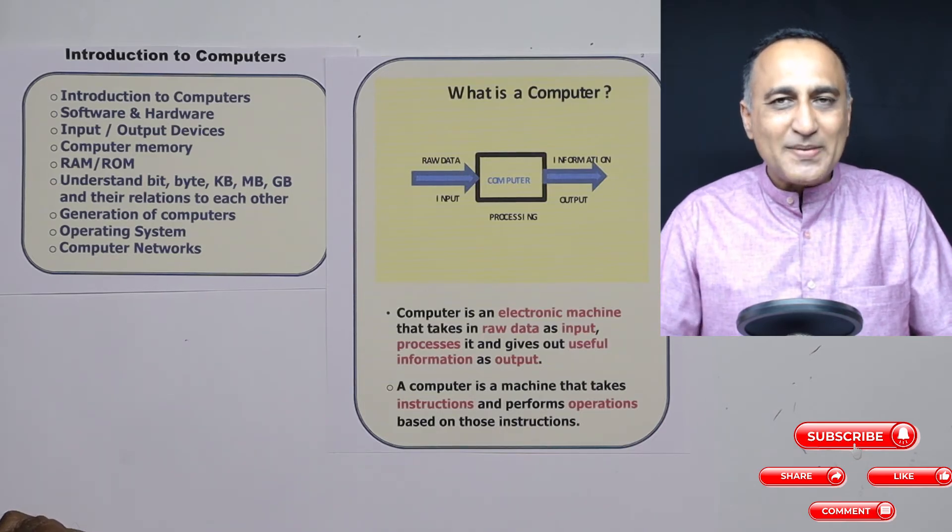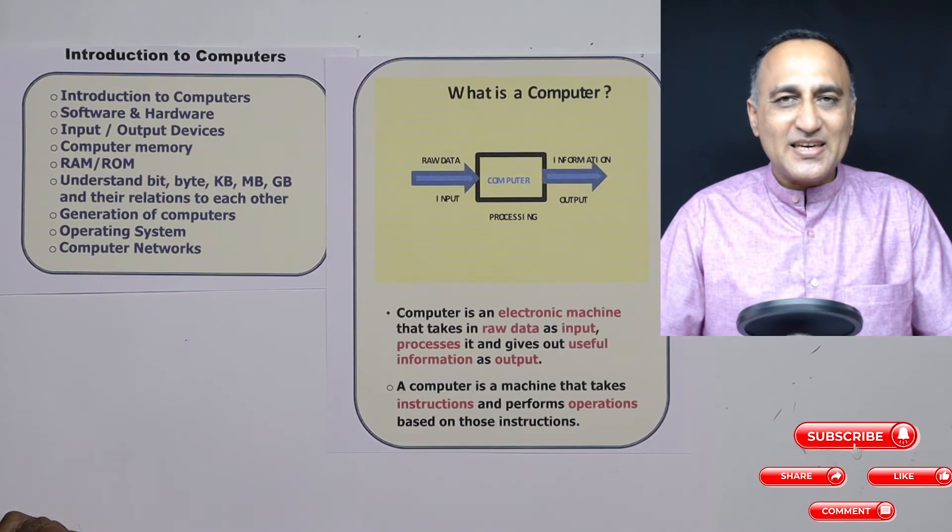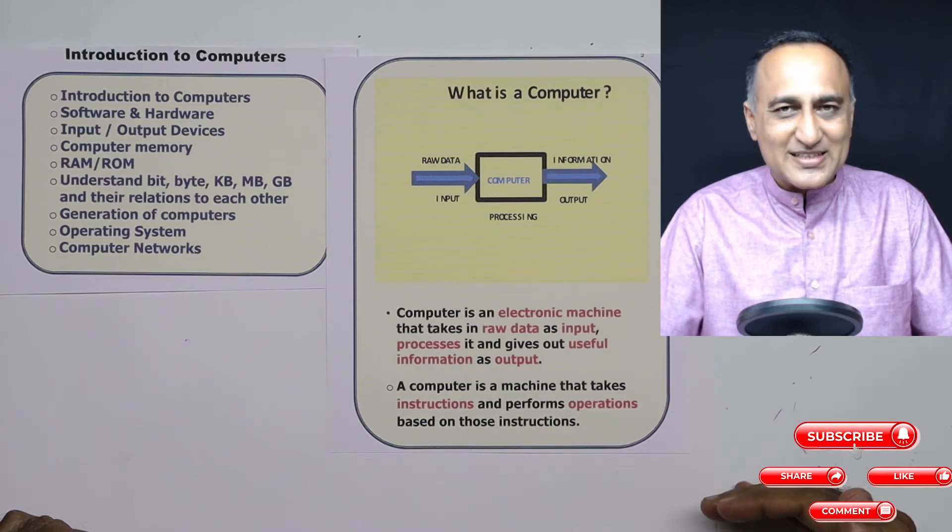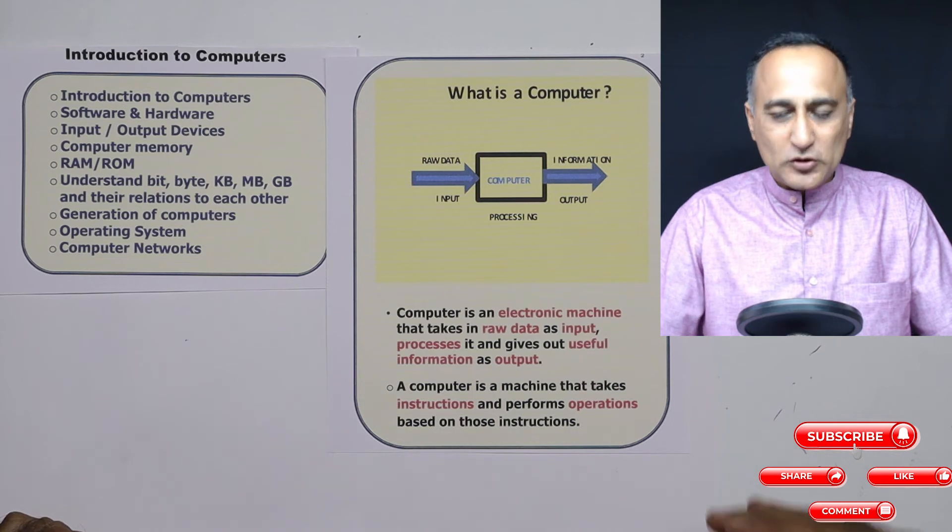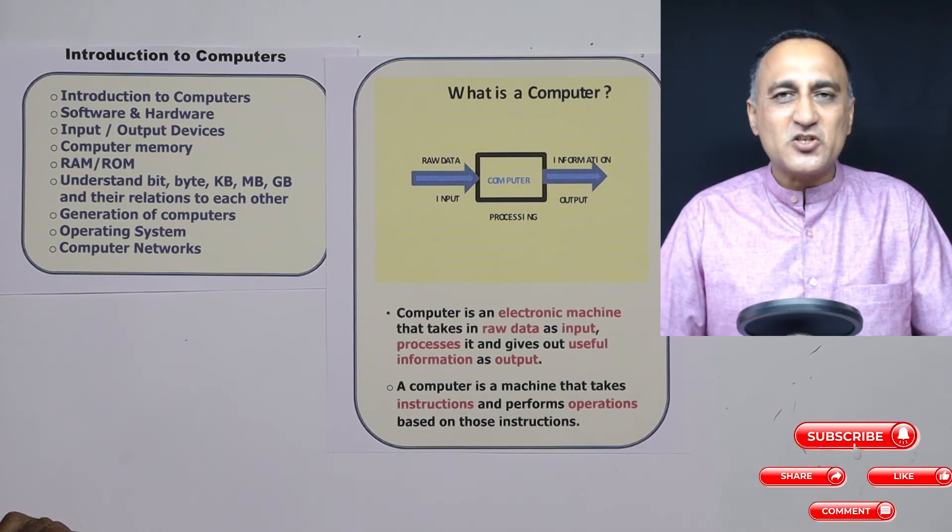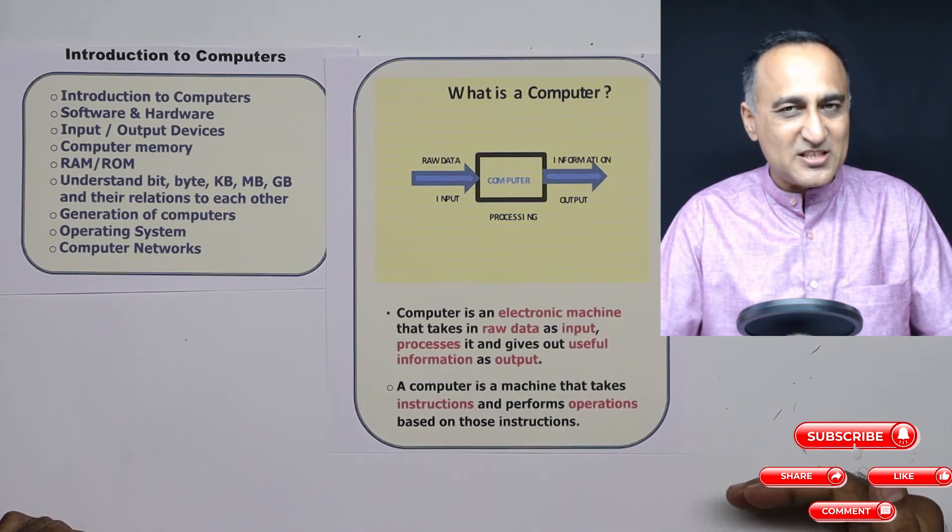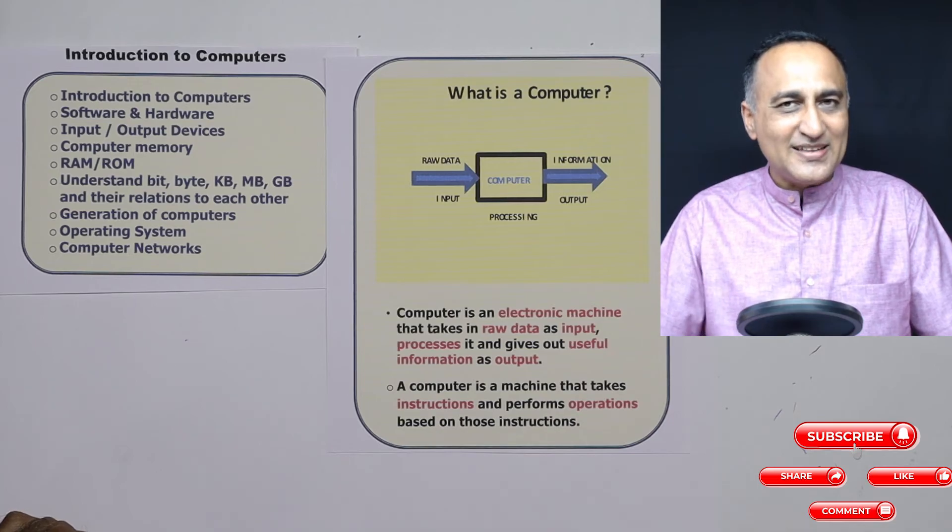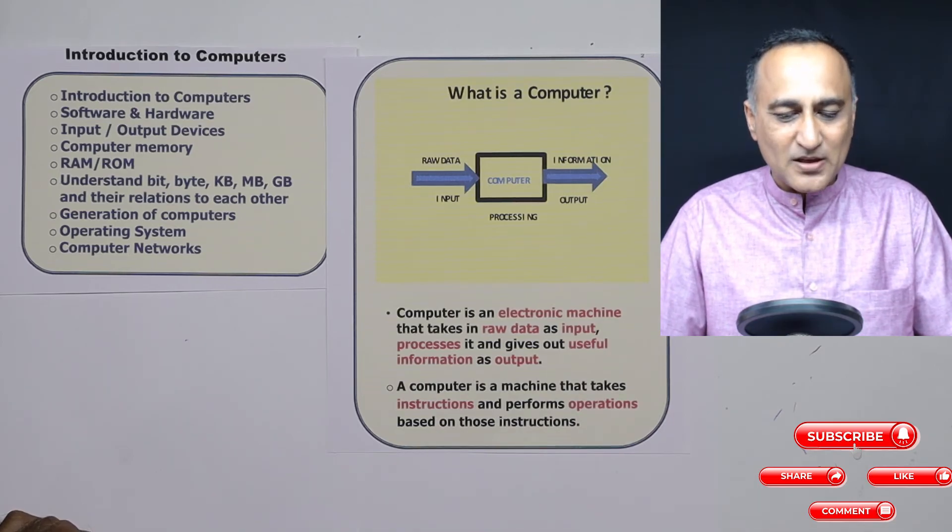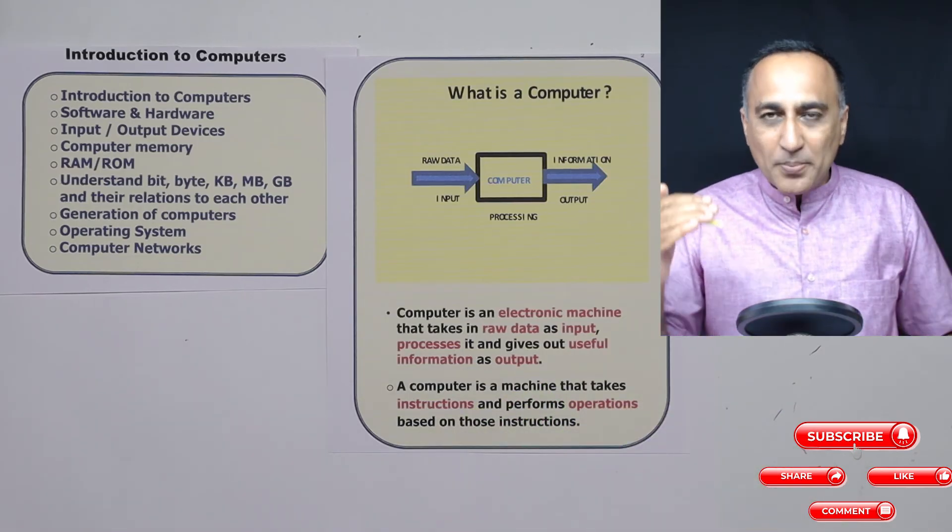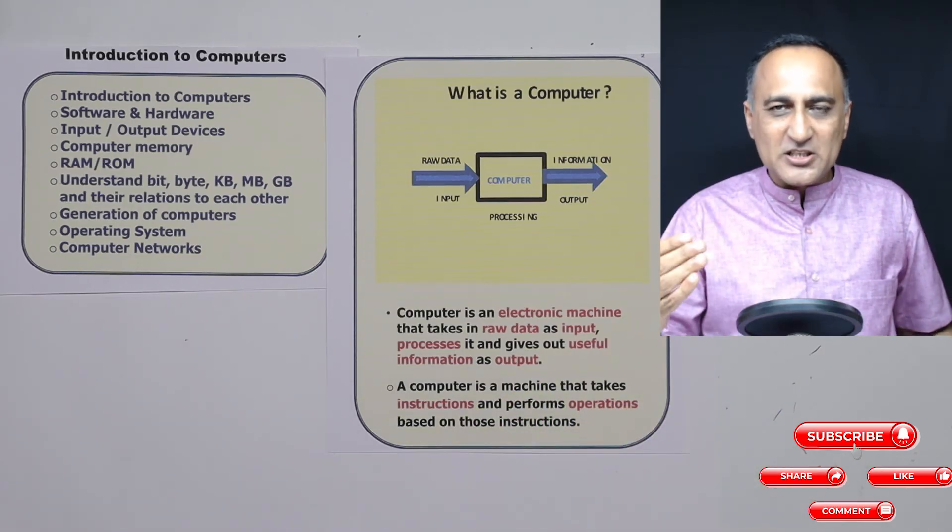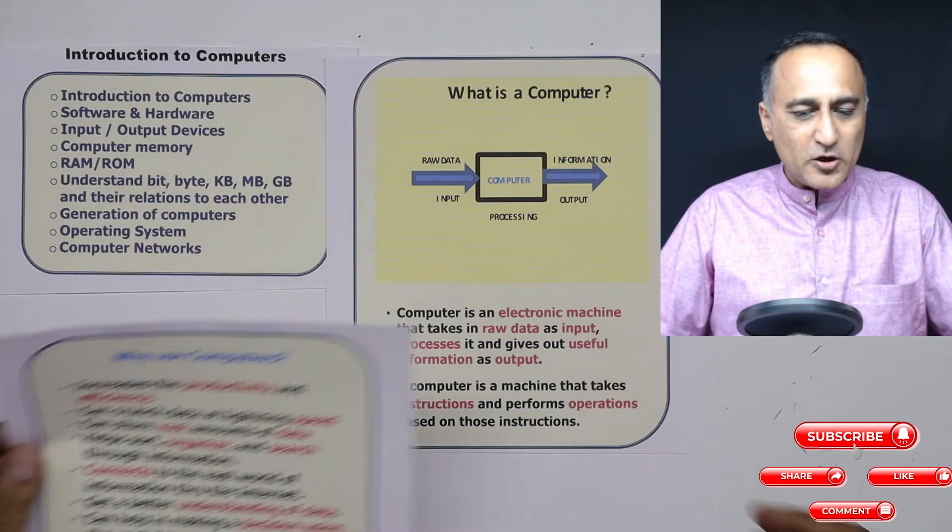Now suppose I have to do some addition in a computer. I will say get the first number, get the second number, add the two numbers, and print the result. Each of them happens to be an instruction. What is data? The first number is data, second number is data, the result is the information.